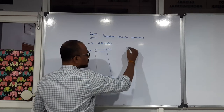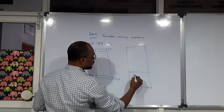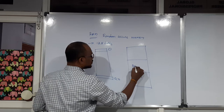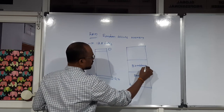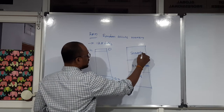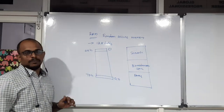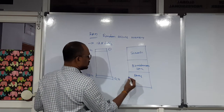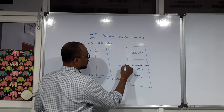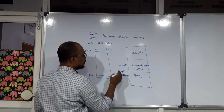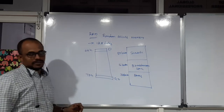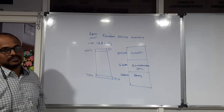This RAM memory is divided into three sections. The first section is Banks, the second section is Bit Addressable Space, and the third section is Scratch Pad Memory. Each section has its own number of locations. Banks take 32 locations, Bit Addressable Space takes 16 locations, and the remaining 80 locations are allocated for Scratch Pad Memory. Based on this, you can calculate the addresses of individual sections.